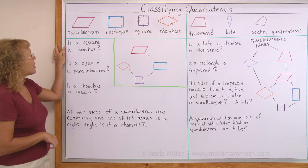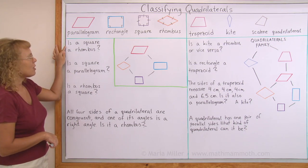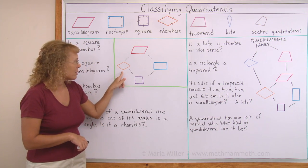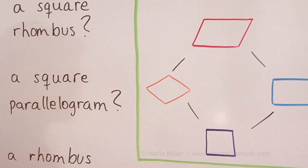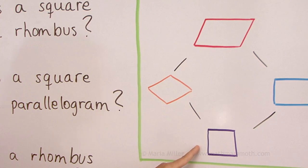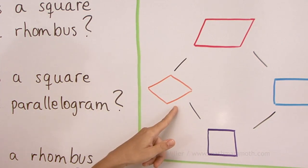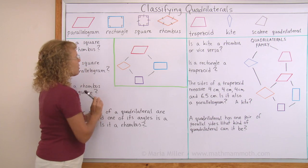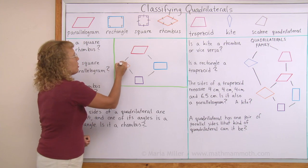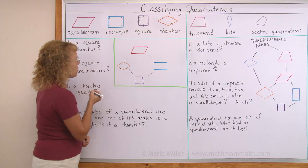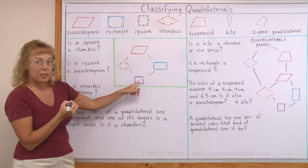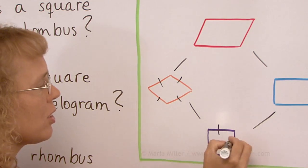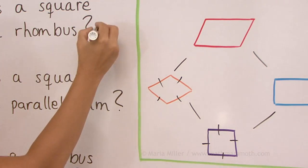It is asked: is a square a rhombus? Yes it is. You can see it from the diagram because the square is in that family. Or you can think of the definition — the definition of a rhombus is that all four sides are congruent. Is that true of the square? Yes, all four sides are congruent. So a square is a rhombus.